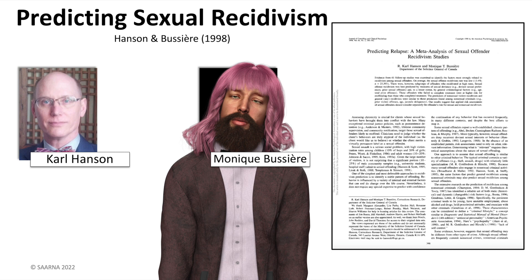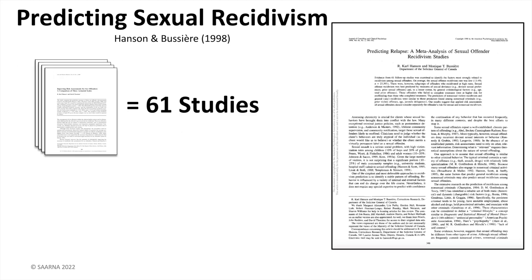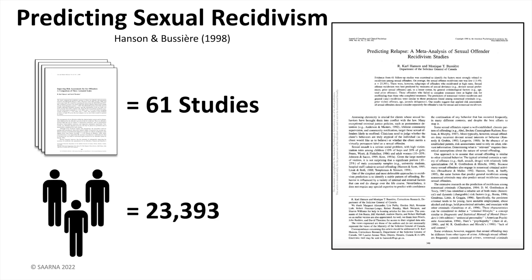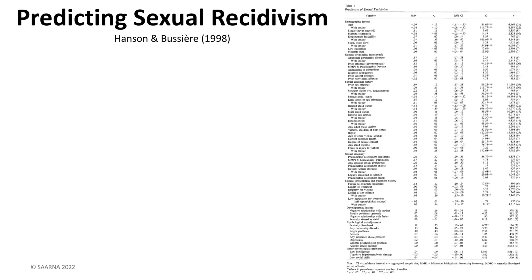Carl Hansen and Monique Boussier's 1996 meta-analysis examined factors that predicted sexual recidivism. They took on the monstrous task of synthesizing information from 61 separate studies representing over 23,000 participants. Results were quite fascinating as they provided strong empirical guidance for what may or may not explain sexual offending.